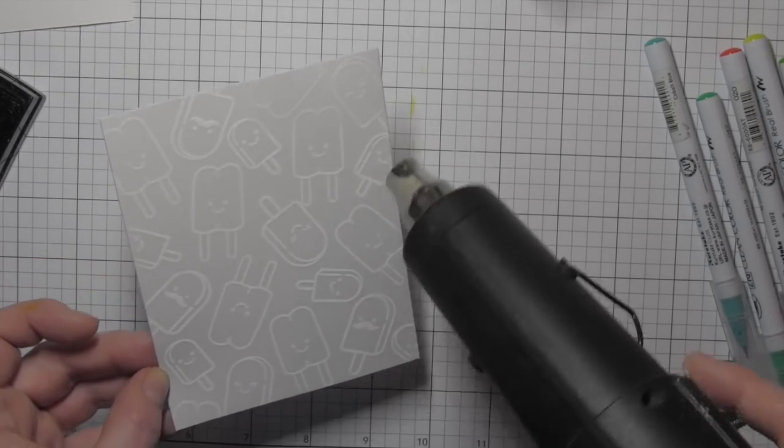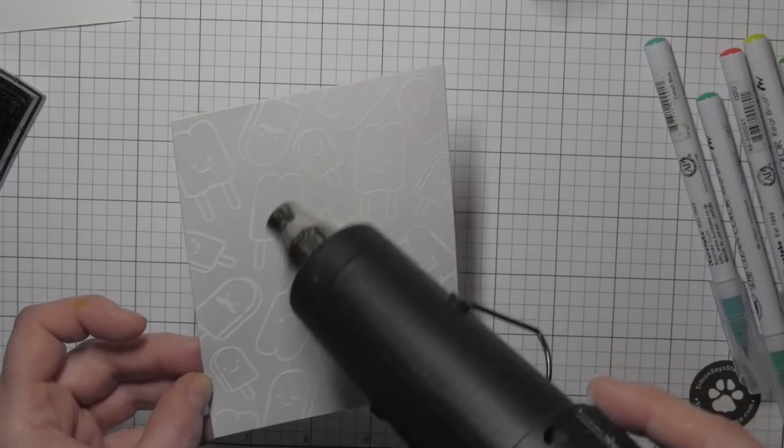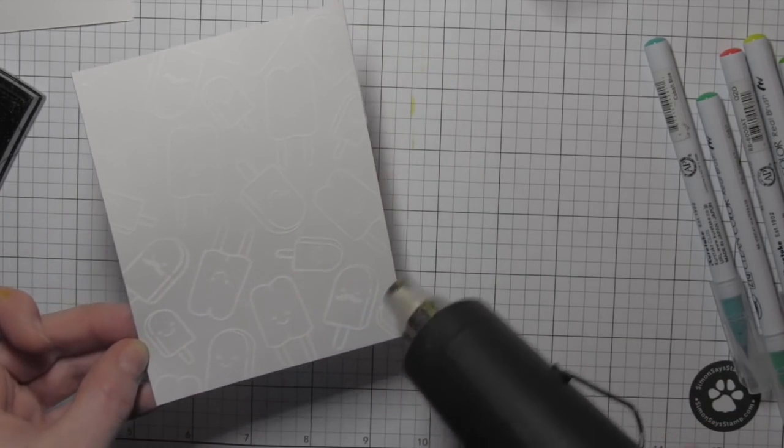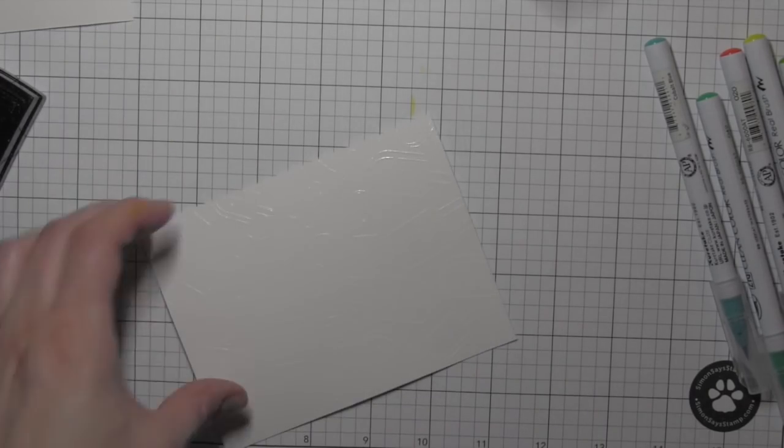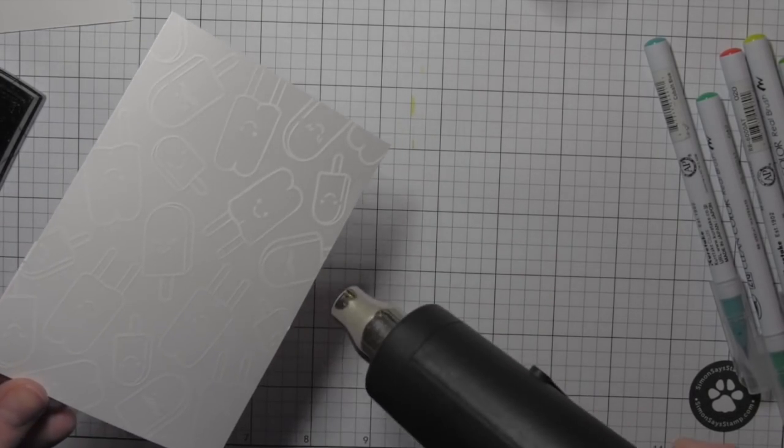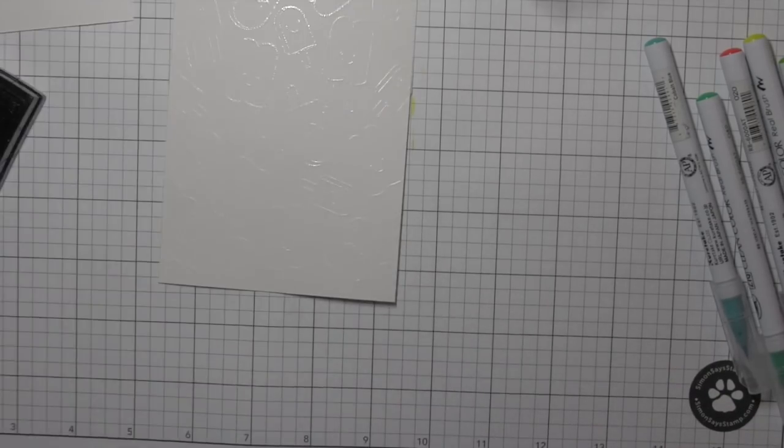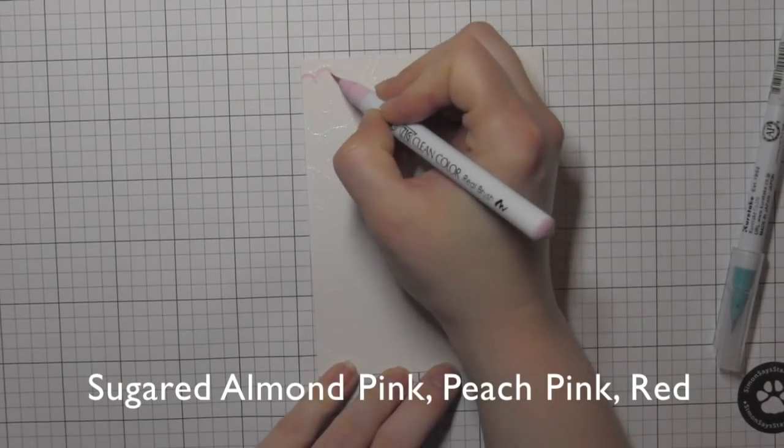But I need to melt all that embossing powder really good, so I'll just keep moving my gun around. I don't want to scorch the paper anywhere. Finish embossing those last few, then comes the fun part.